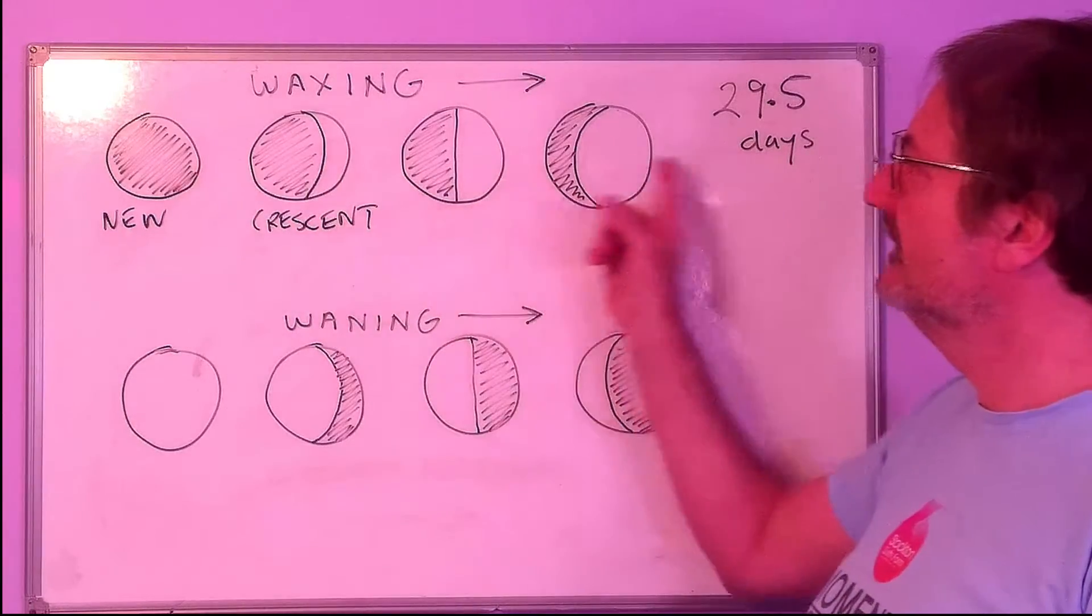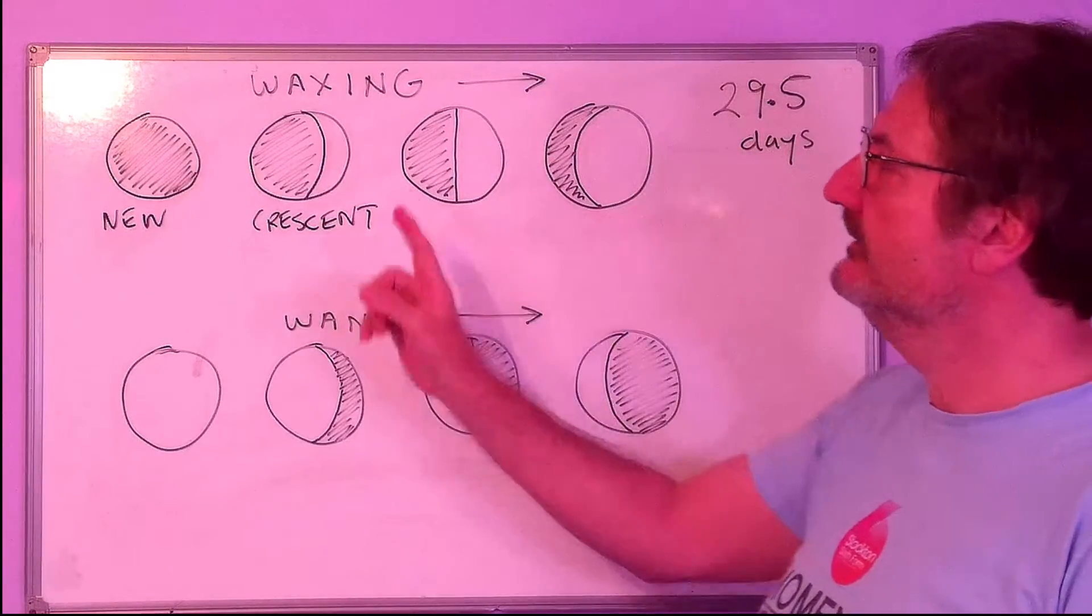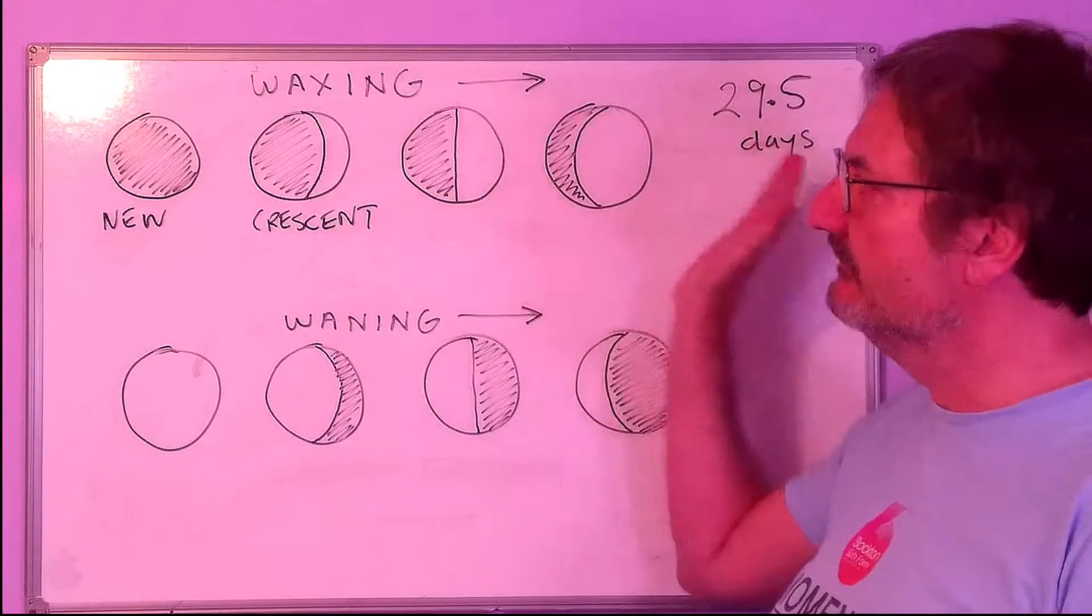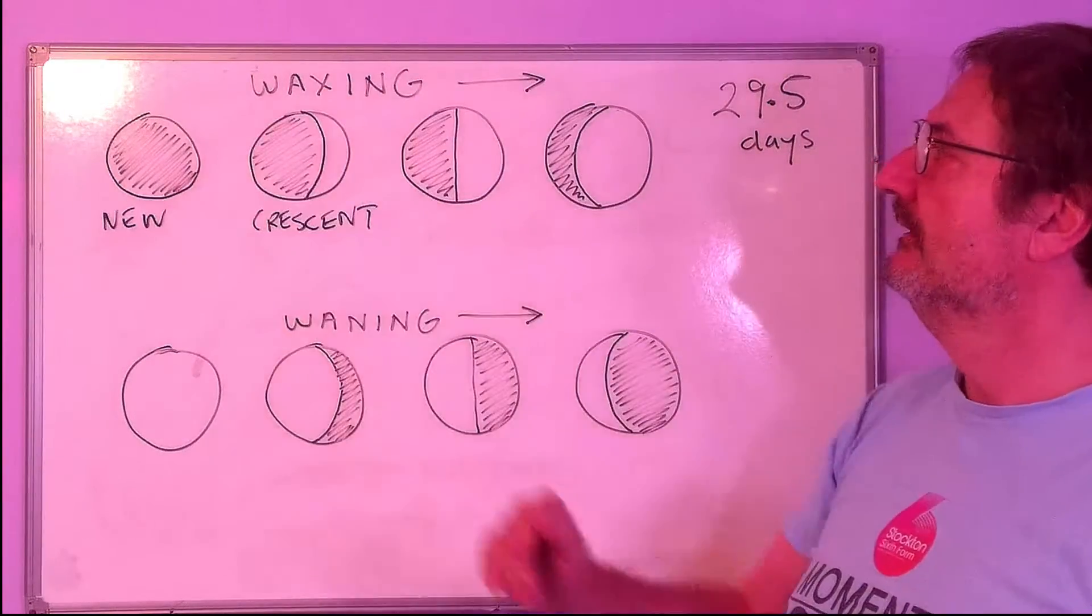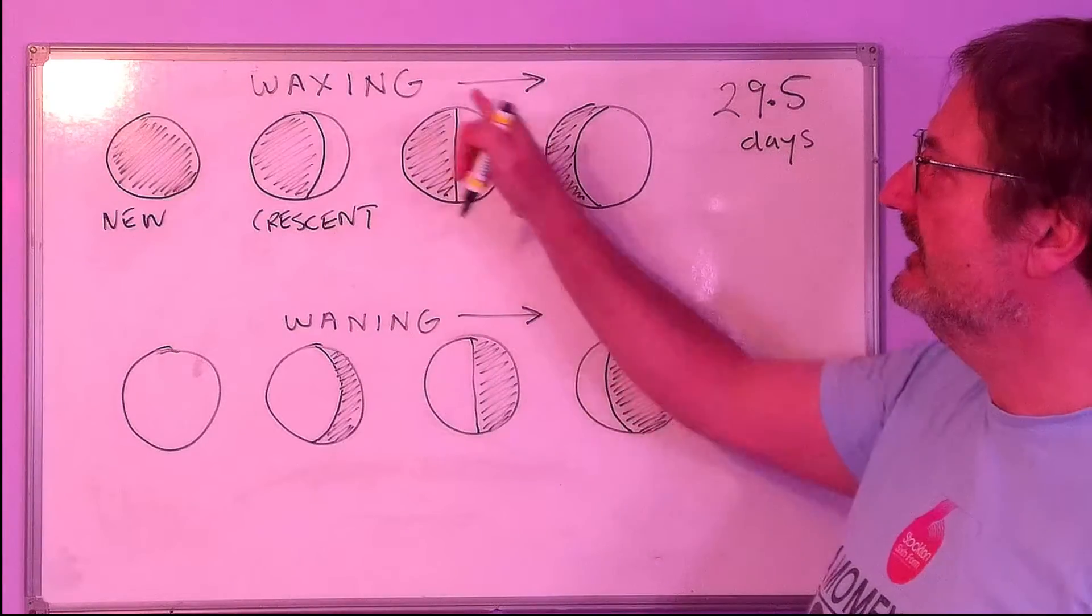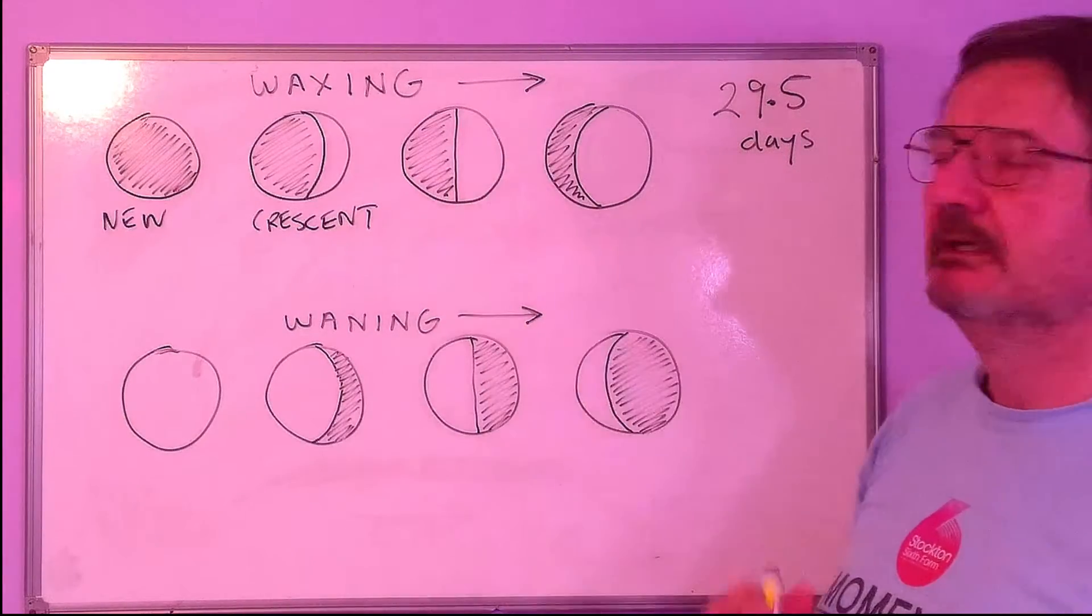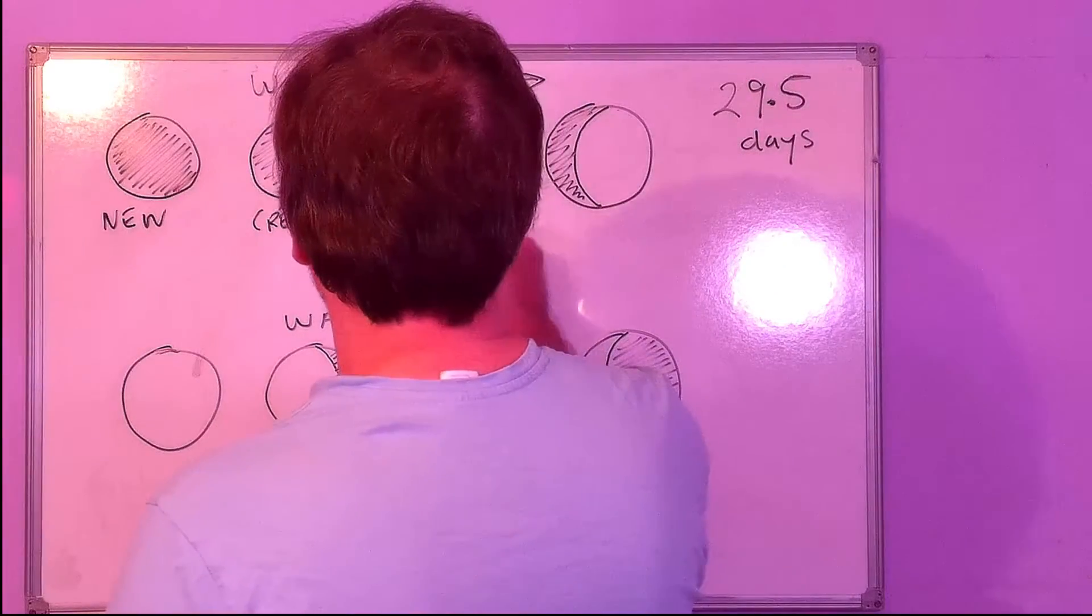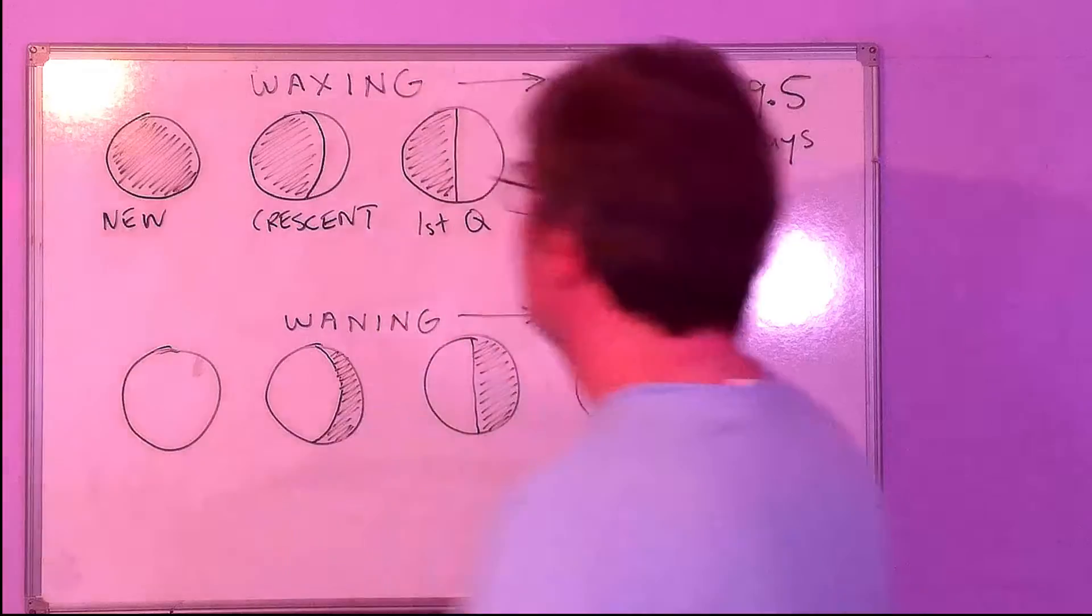Here to here, we see more and more of the moon. Notice that what we can see kind of creeps in from right to left. The next thing that we can see is when we see half of the face of the moon, and that's called the first quarter.